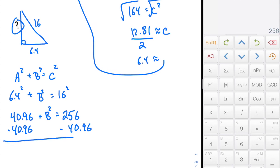So I'll do that here, minus 40.96. And I get 215.04 is B squared. I'm going to square root both sides. So the square root of 215.04 is going to be 14.66.